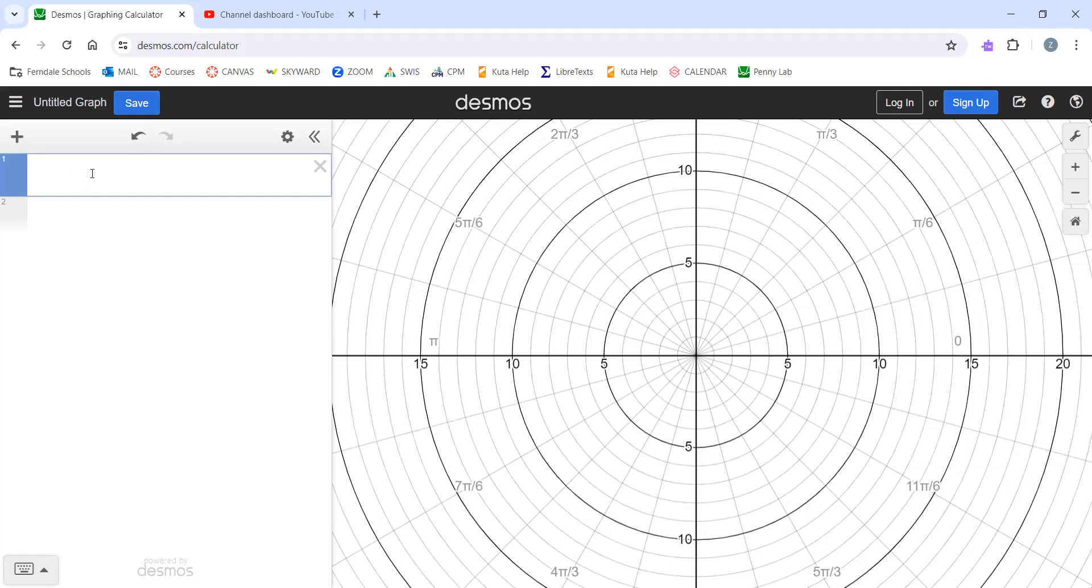So I'm going to type in the format that I see on my sheet for a lemniscate. It's R equals plus or minus A. I'm just going to use A. R equals A and then plus B. And it could be sine or cosine. We'll go ahead with sine.